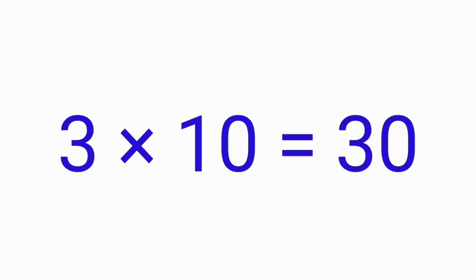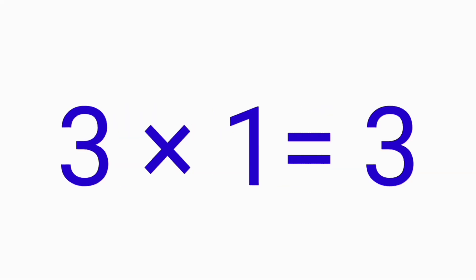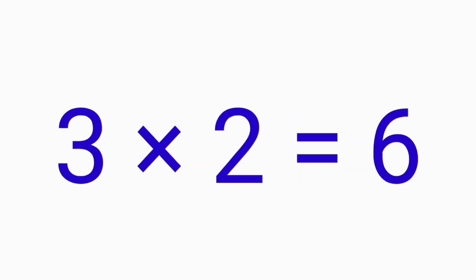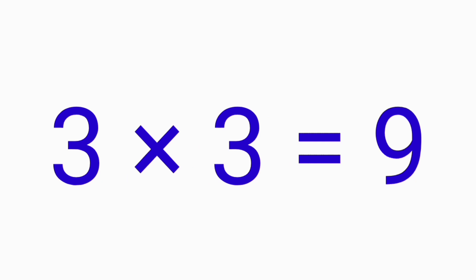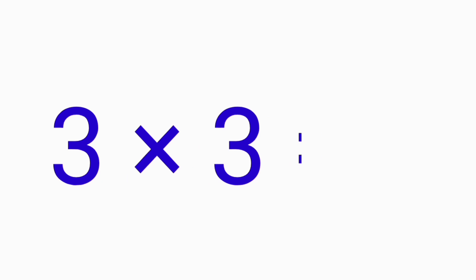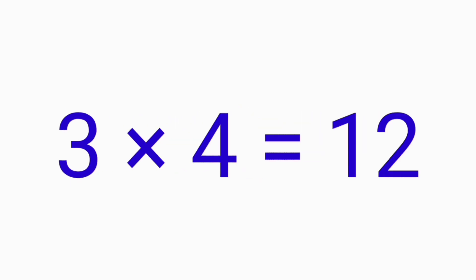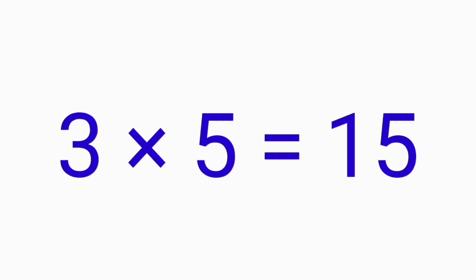Let's repeat once again. Three ones are three. Three twos are six. Three threes are nine. Three fours are twelve. Three fives are fifteen.